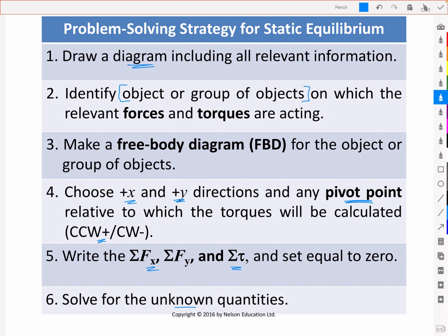As I've mentioned, we've done equilibrium problems before, but notice that now, by adding in an extra equation, the sigma tau equal to zero, we can solve for one further unknown, or require one less known parameter.